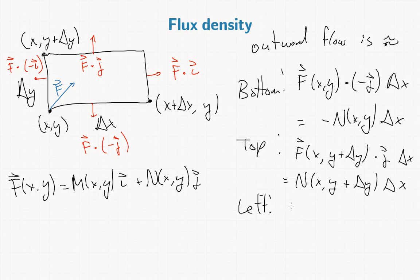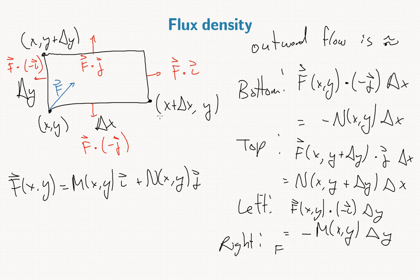On the left edge we'll have f of (x,y) dot negative i, delta y, and so this will give us negative M(x,y) delta y. And then on the right we'll have f of (x plus delta x, y) dot i delta y, and so that will be M(x plus delta x, y) times delta y.